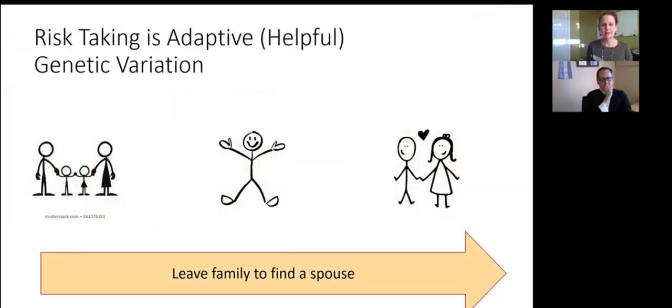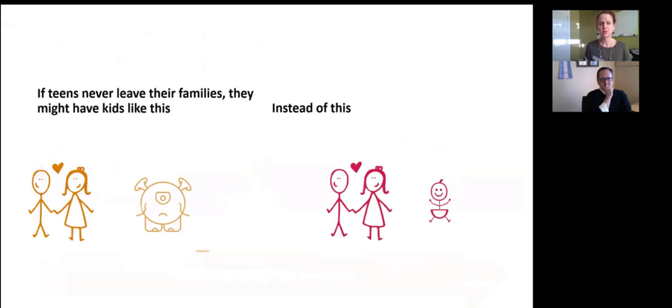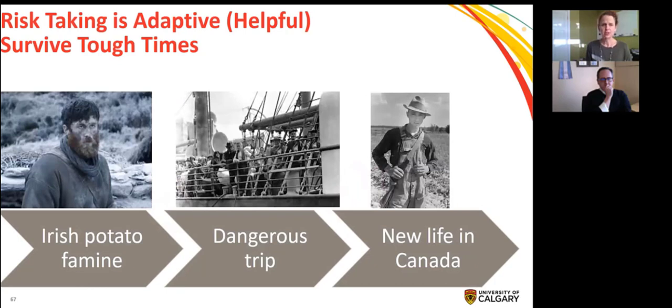So risk taking can be adaptive and helpful. So for example, it encourages teens to kind of move away from their families and to find a mate somewhere else rather than in their small family circle. This is helpful because we know that in places where people stay in the same area and they don't have genetic variation, they tend to have a lot more disorders and problems. So really leaving and taking those risks to move on helps to increase genetic variation and the health of humans as a species. It also helps us to survive as a species through challenging times. So for example, when really bad things happen in the world, teens tend to be the ones who take the dangerous trips to leave to find new places to start new lives. So the example here is the Irish potato famine and it wasn't like all of the 40 year old people who decided to leave to go to Canada to start a new life. It tended to be the teenagers who did it and that ended up being really beneficial for them to continue their bloodline.